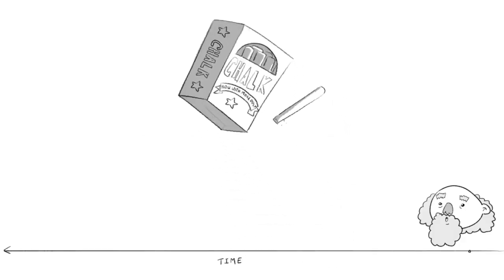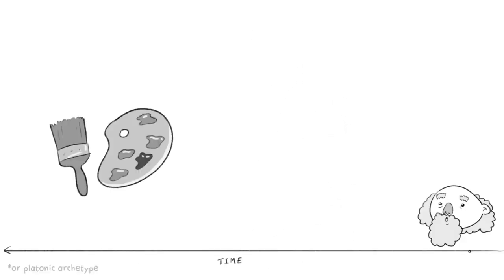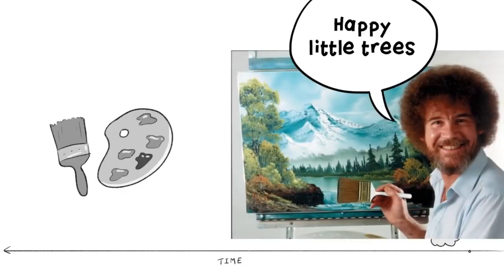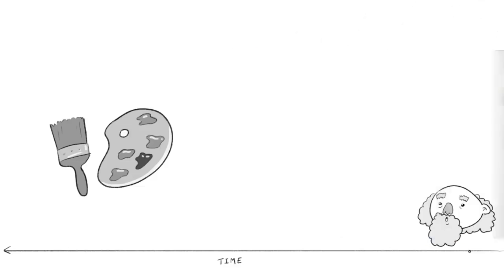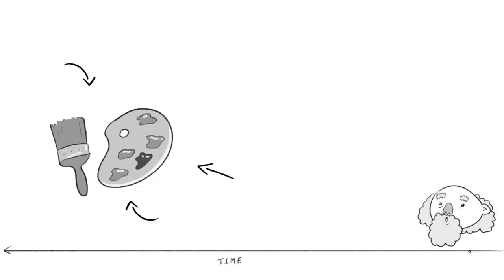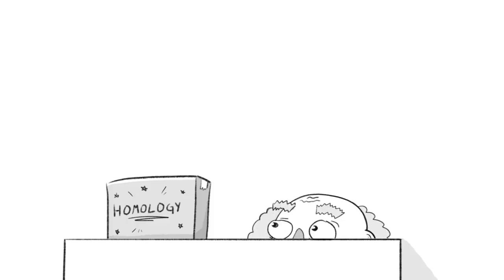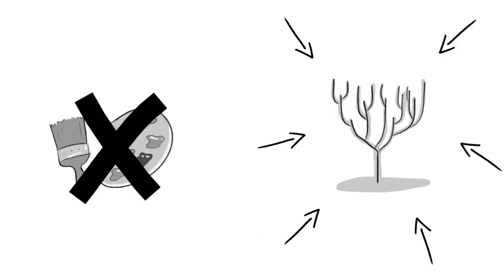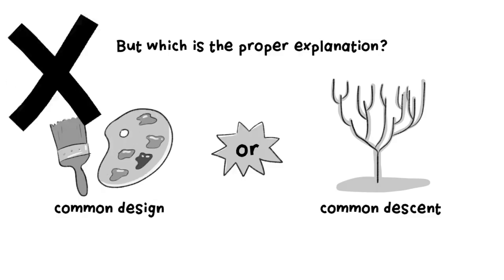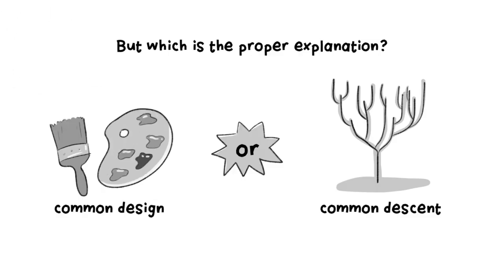Why in the world would that be the case? Before Darwin, biologists chalked this up to common design — just like a painter has a particular style and reuses similar colors or themes across a lot of his work, so the thinking went, similarities in animal design pointed to a common designer. A few years later, Darwin figured that these structural similarities were important evidence for his theory of evolution, crediting common ancestry rather than a common designer. But which is the proper explanation for these obvious similarities?